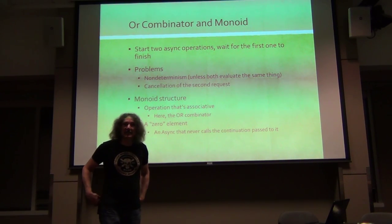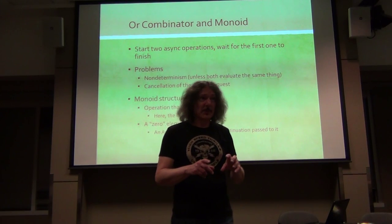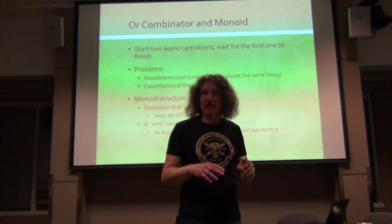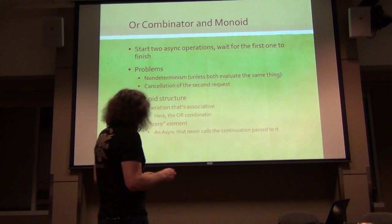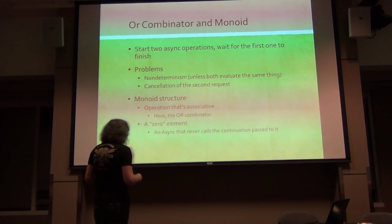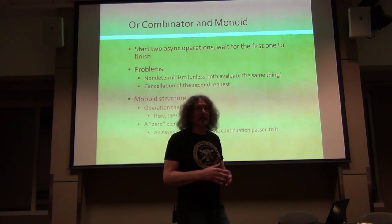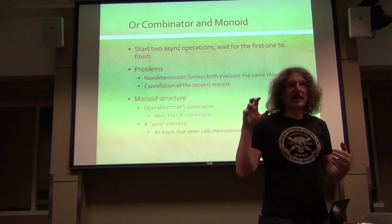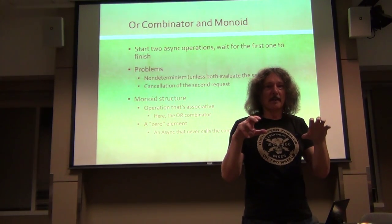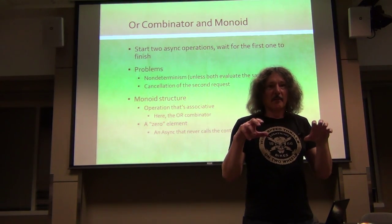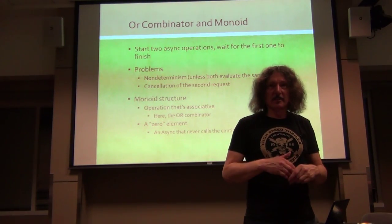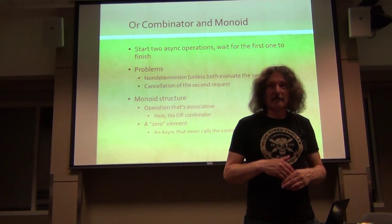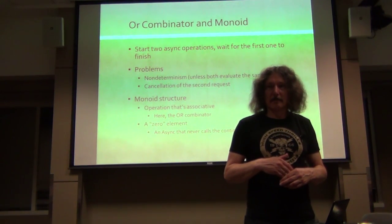The other thing that a monoid needs is zero. It's sort of like a group but without the inverse element. So you have addition with zero, but no negative numbers. Zero would be some async that when combined using OR with another async, the combined thing will just be like the original thing. In arithmetic, it's just non-negative integers - you can add two positive integers together, or add zero and you always get back what you have.